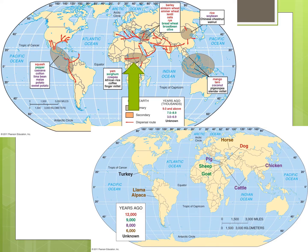Next is Africa. East and West Africa gave us peanuts, yams, and coffee. Sorghum, a grain that is still prominent in Africa, was domesticated in Central Africa.